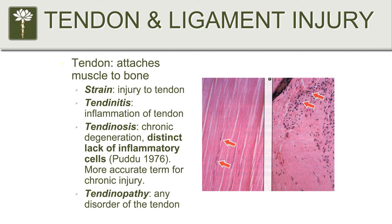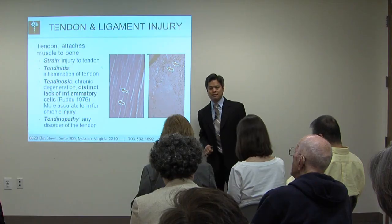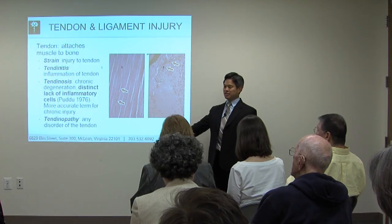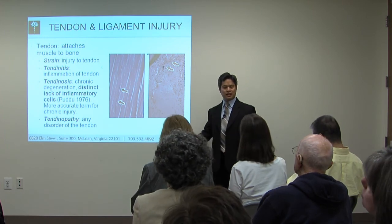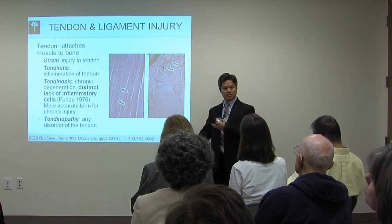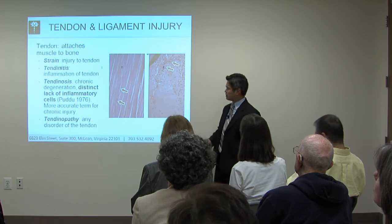A more appropriate term is tendinosis — a chronic degenerative process — and we've known about this since 1976. But how many doctors talk about a chronic tendon problem not being inflammatory? Not a whole lot. So if you throw anti-inflammatories at a chronic tendon problem, it might help a little bit with the pain, but it's not inflammatory, so it's not really going to change what's going on there.